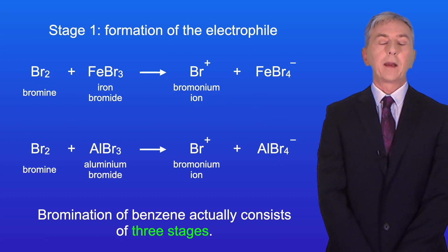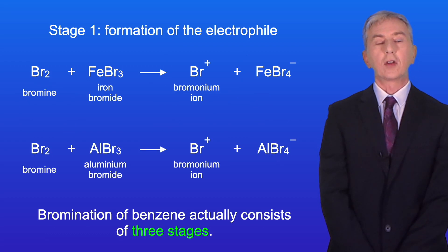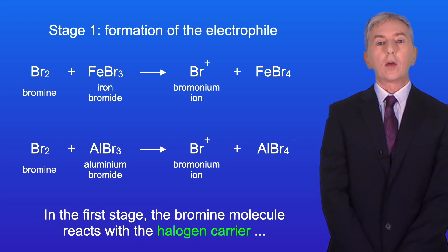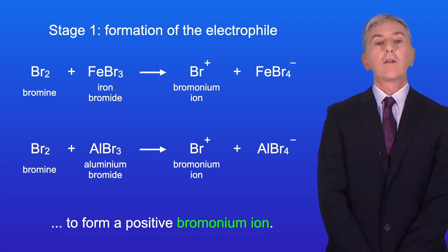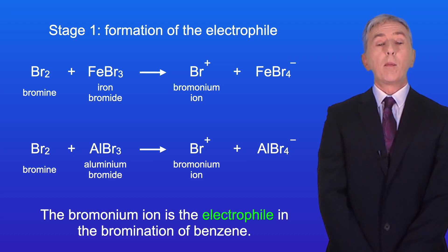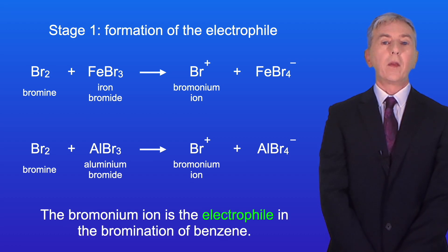Bromination of benzene actually consists of three stages. In the first stage, the bromine molecule reacts with the halogen carrier to form a positive bromonium ion. The bromonium ion is the electrophile in the bromination of benzene.